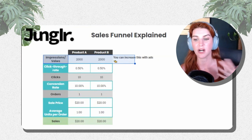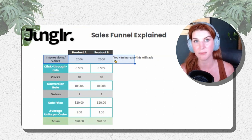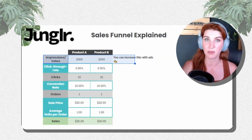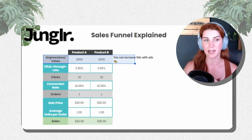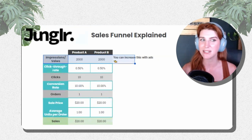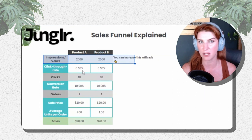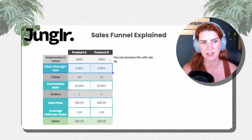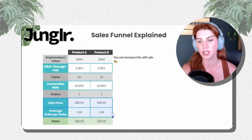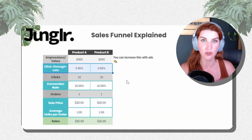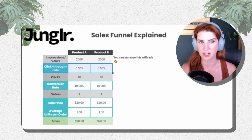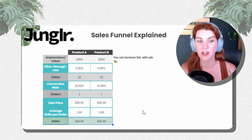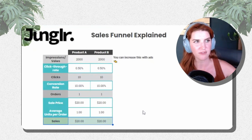Think of impressions as the top of the funnel — everyone flowing in, people who run across your product in their day-to-day Amazon shopping. You could show up in the search grid, on a product page, maybe you're running sponsored display ads on the homepage, or running DSP ads off-site. These are all the views — people running across your products.